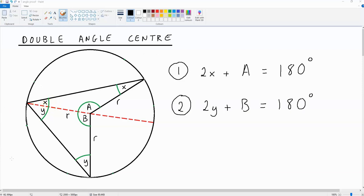So, with the logic that I've just described, it is fair to say that 2x, two of these angles over here, plus the angle a, add up to 180 degrees. It is also fair to say that 2y plus b, so two of these angles over here, plus the angle b, is equal to 180 degrees.